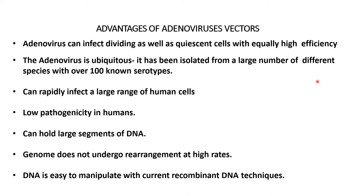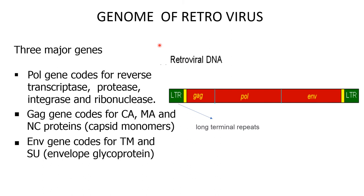Adenovirus is ubiquitous — it has been isolated from a large number of different species with over 100 known serotypes. It can rapidly infect a large range of human cells, has low pathogenicity in humans, can hold large segments of DNA, and does not undergo rearrangement at a high rate. Its DNA is easily manipulated with current recombinant DNA techniques.